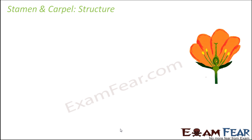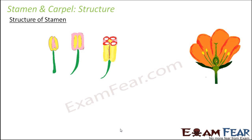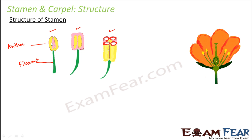Let us look at the structure of a stamen in detail now. This is how the stamen looks like when you look at it from the back side, from its facial side, and when you look at the cross section of it. Basically, a stamen consists of three parts: filament, anther, and connective. This is the filament. This is the anther. And this pink colored structure is the connective — these are the three parts of a stamen.